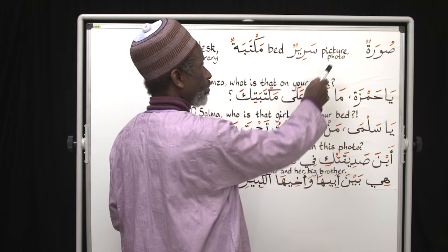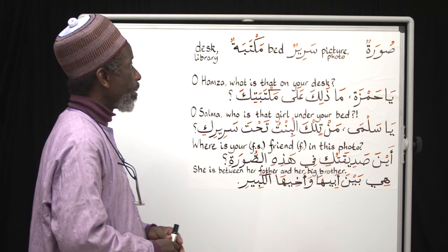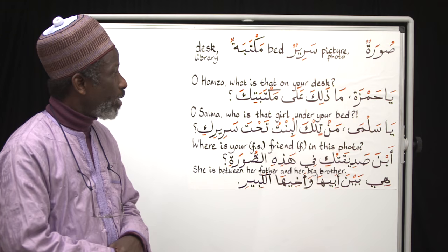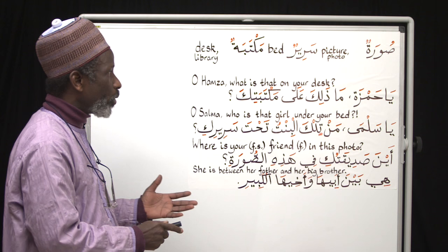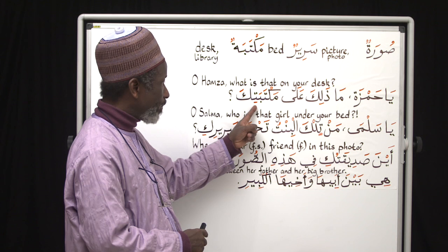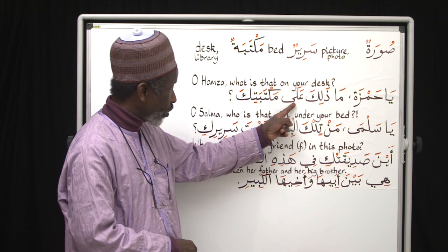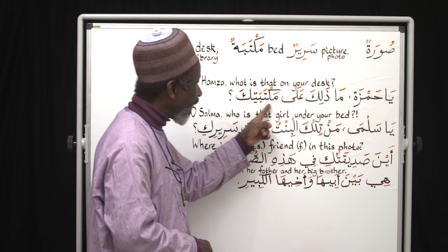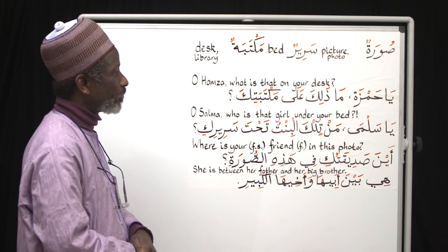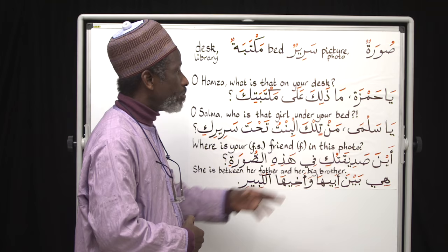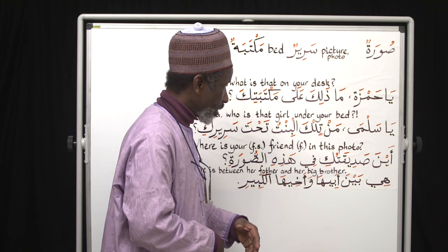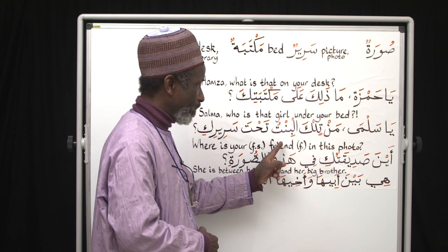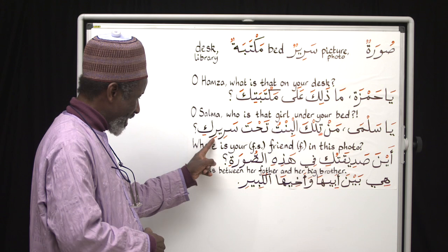More practice and vocabulary. Suratun means a picture or photo. Sarirun means a bed. Maktabatun means a desk. Yaa hamza, maa dhalika alaa maktabatika — Oh Hamza, what is that on your desk? Alaa is the preposition, so maktabatun becomes maktabatika: defined by preposition and possessive, ending with a single kasra. Maa dhalika alaa maktabatika.